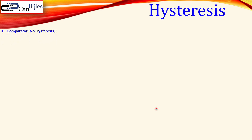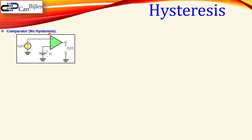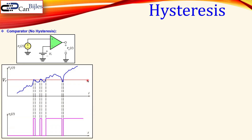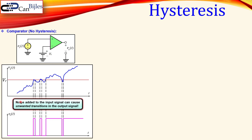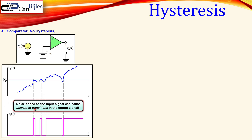Now why do we have a hysteresis? If you have a simple comparator with no hysteresis, you have a reference voltage, say 2 volts, and you compare it with your changing input voltage. If the reference voltage is 2 volts and your signal is corrupted by noise or some interference, then your output is triggering all the time because of these small changes near the reference voltage — it is really sensitive to very small changes. Noise added to the input can cause unwanted transitions in the output, which are of course not what we want.